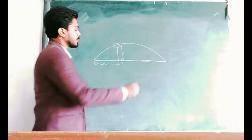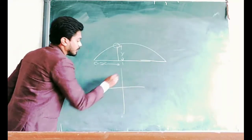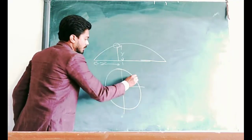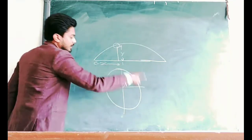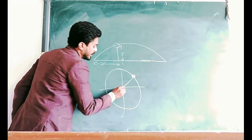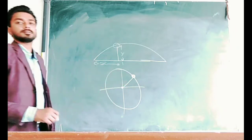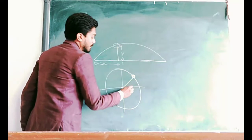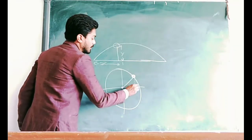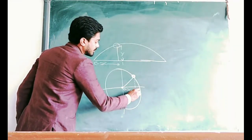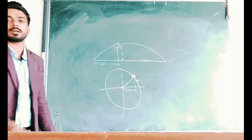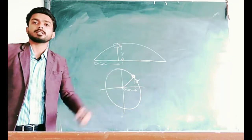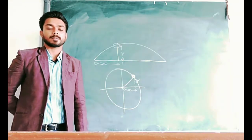Similarly, if a body performs a circular motion — suppose a body is performing a circular motion with the centre at the origin — then we can see the body can be located by using the x-axis and y-axis, because both axes are required to locate the position of this body.